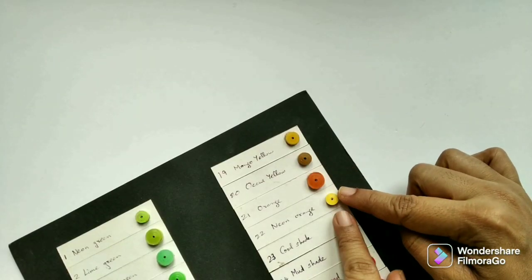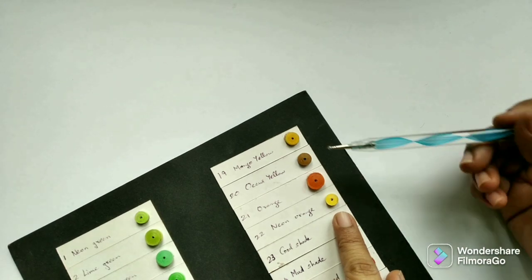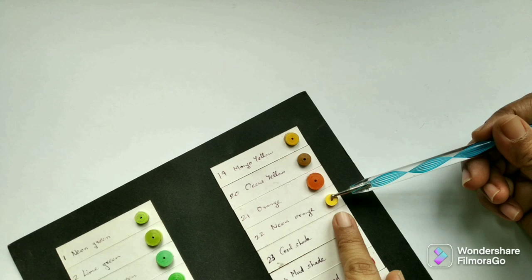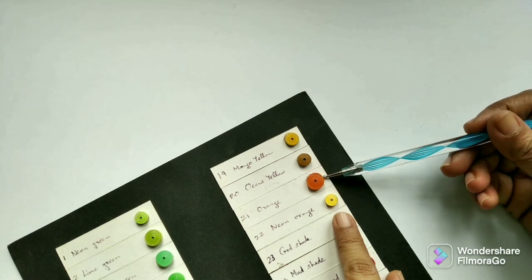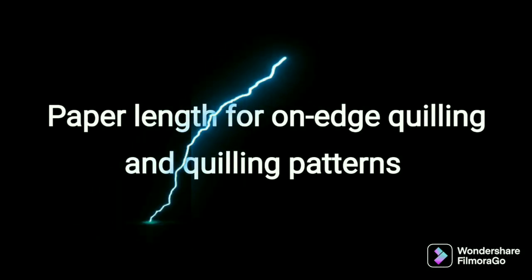Here, both these tight coils are made from a full-length strip, but because the thickness of one is more than the other, the thicker paper makes a bigger coil.